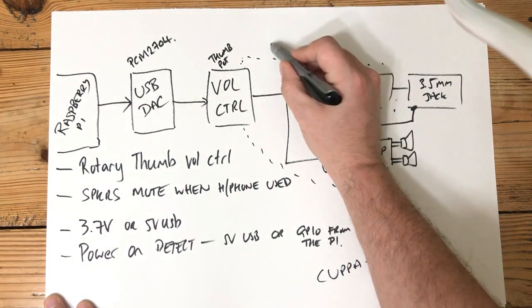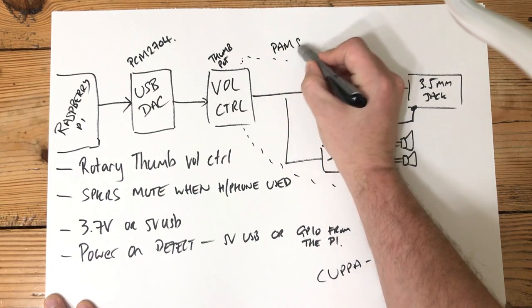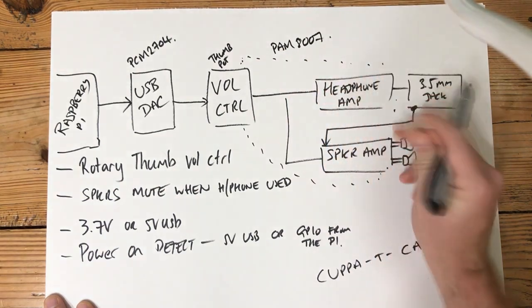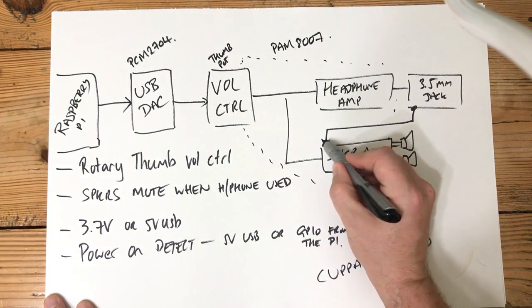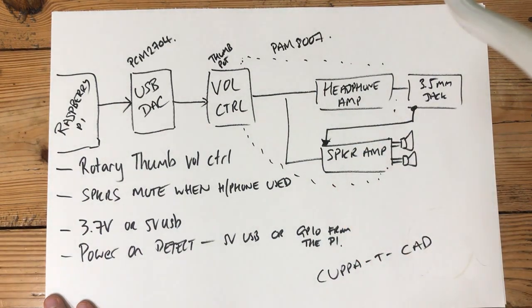So there's a device called a PAM8007, which integrates these two and even has a pin that can switch off the speaker amp as well, providing I can get a logic level signal. So that brings me to the jack.